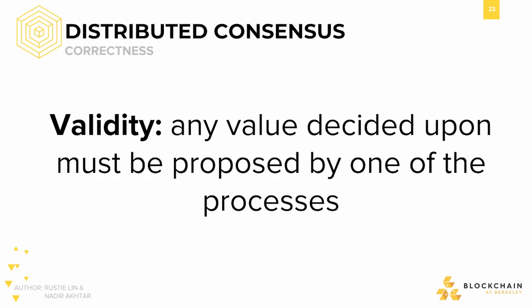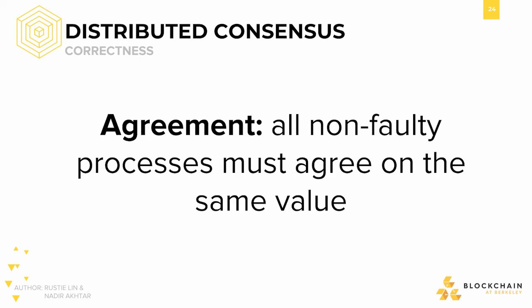Validity means that any value decided upon by the network must be proposed by one of its processes. In other words, the consensus algorithm cannot arbitrarily agree on some result — it cannot be hard-coded to always return the value zero. Sure, all nodes will agree, but is that really a valid answer? If every node started off with one and we're looking for a majority value, zero is meaningless. Agreement means that all non-faulty processes must agree on the same value. It's pointless to consider faulty processes, since those can always be wrong. Of the working nodes, we never want a situation where one says zero and one says one — if there are inconsistencies, which one is correct? In order for the result to be meaningful, all functioning processes must agree on it.